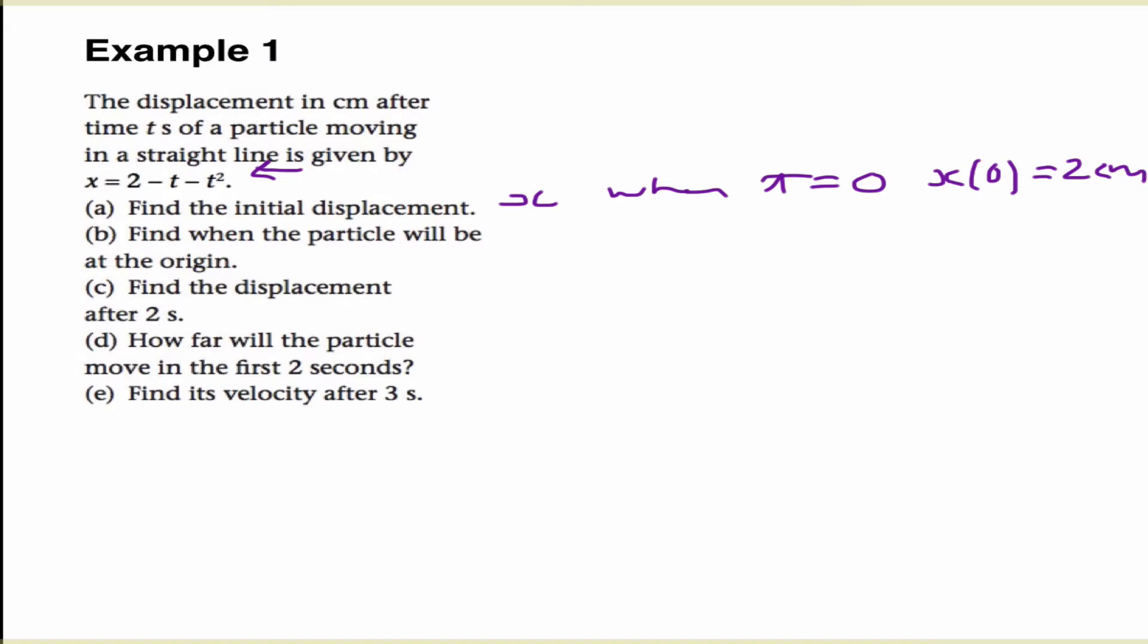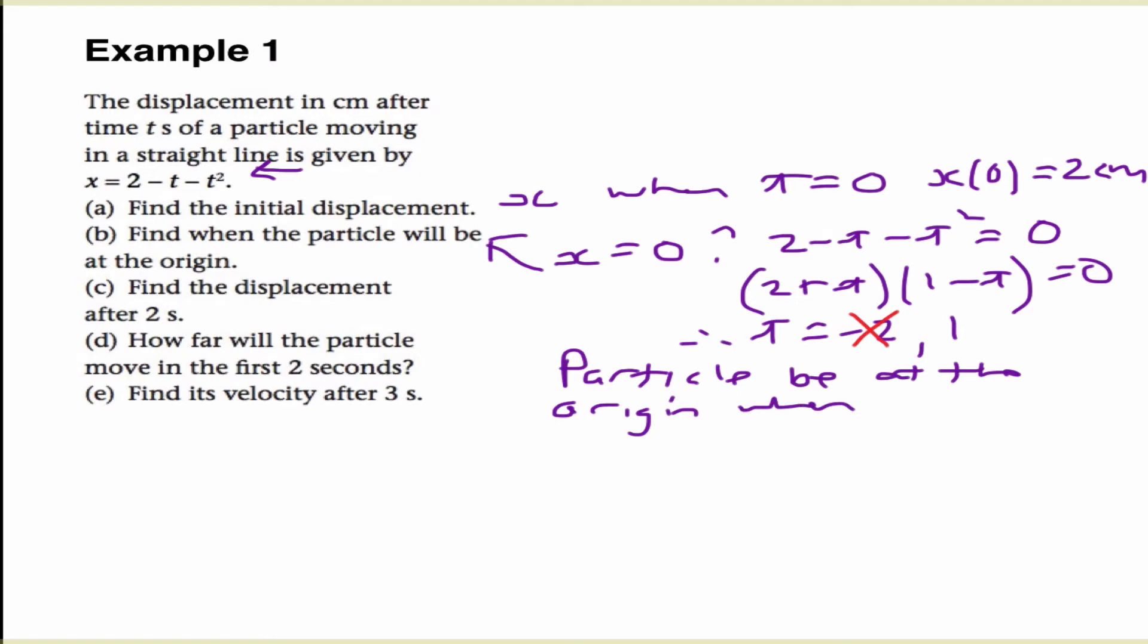Find when the particle will be at the origin. So this question here is asking us, find when x is equal to 0. So we can do that by factorizing. And if we do that, we get 2 minus t minus t squared is equal to 0. So we get 2 plus t, 1 minus t. That should give it to us. So we get 2t minus t, yes that's right, is equal to 0. So therefore, t is equal to negative 2 or positive 1. Now obviously, we can discount one of those values. t can't be equal to negative 2 because we can't have a negative time. So our particle will be at the origin when t is equal to 1 second.